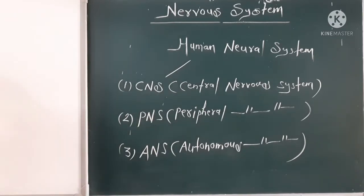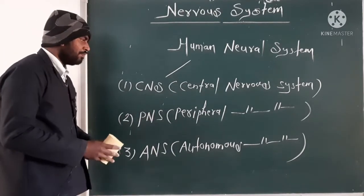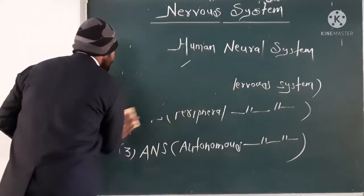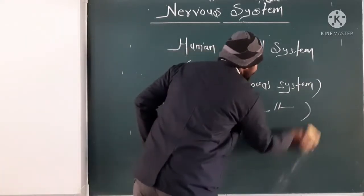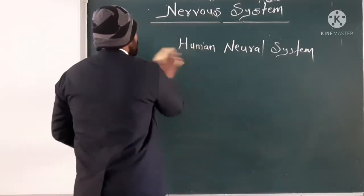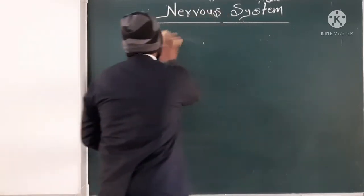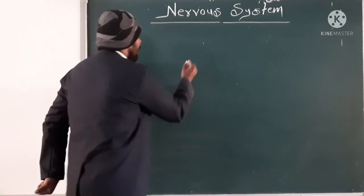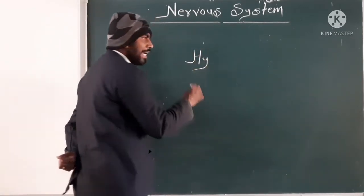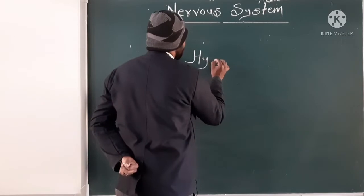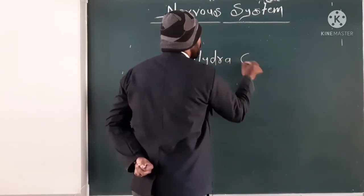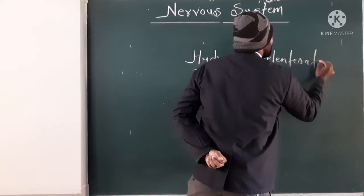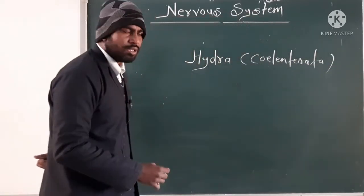A general account is also given in your NCERT book for the concise study of neural system evolution. When we talk about hydra, which belongs to the group Cnidaria, it has the simplest type of neural system present.